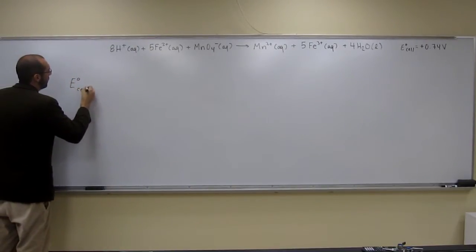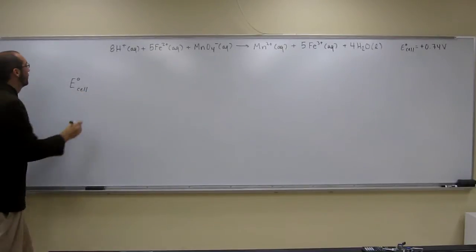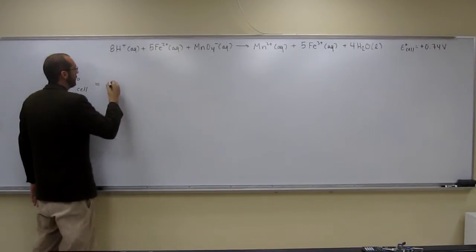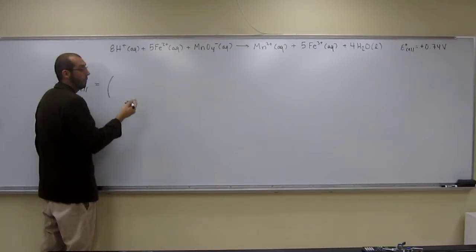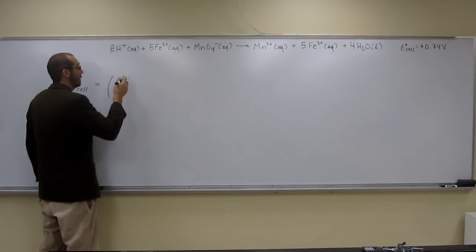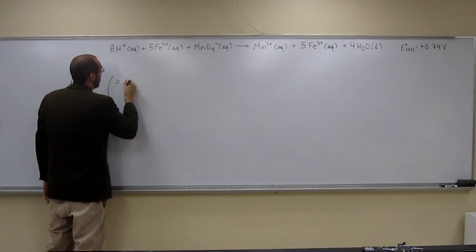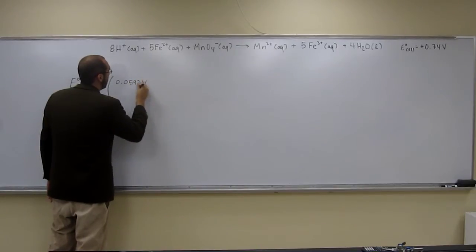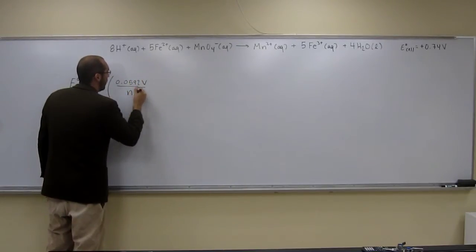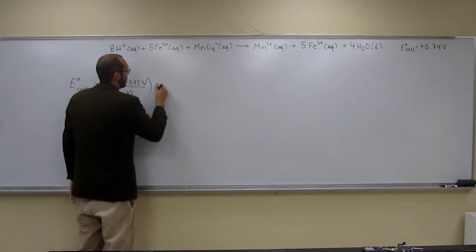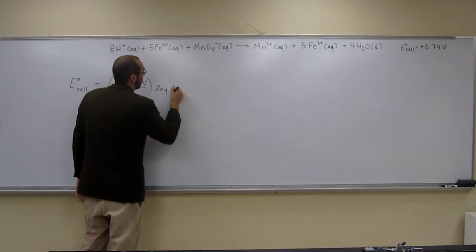So we're going to use the standard cell potential equation. E cell, like that, equals, so this is for standard conditions, 0.0592 volts divided by N times the log of KEQ.